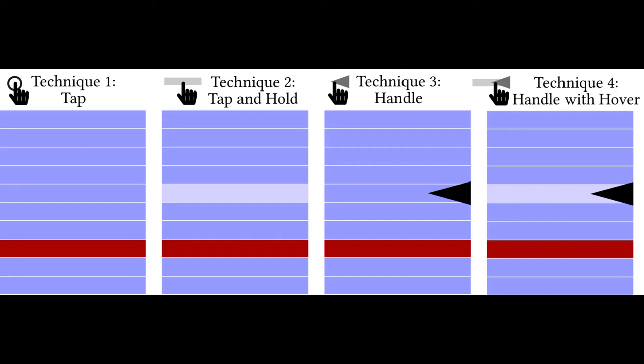The handle technique provided accurate positional information on where the selection would occur, similar to a mouse. And finally, the handle with hover technique combined the two types of visual feedback and provided position and item-level visual feedback.